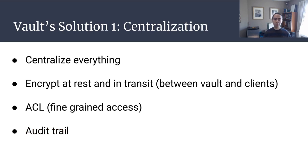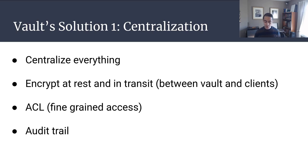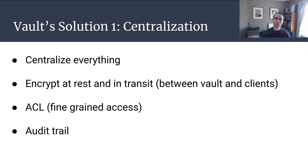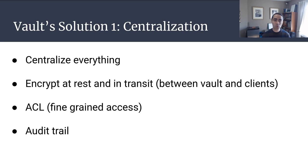The first solution vault came up with — and really how Vault started — was to centralize everything. If you centralize all these secrets, you can encrypt them at rest or in transit, or both. In transit refers to the communication between Vault as a server and the clients of Vault. You also want granular access control lists and an audit trail. That's the first solution: centralization with Vault to solve secret sprawl.